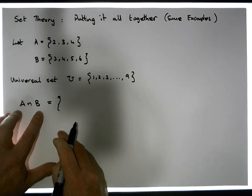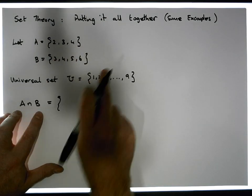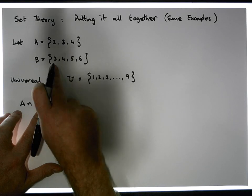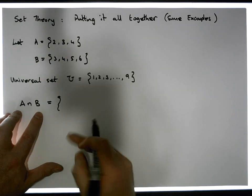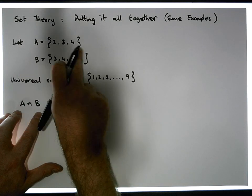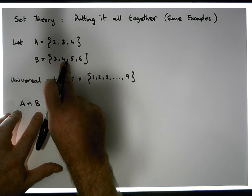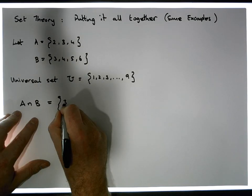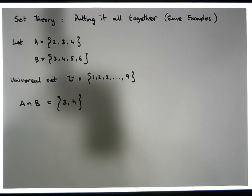So the intersection is: what does set A have that set B also has? We see that the commonality between set A and set B are the elements 3 and 4 — 3 and 4 occur in both sets. So the intersection of both sets is {3, 4}.